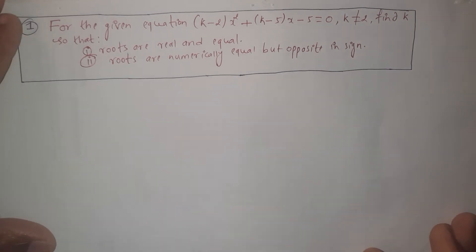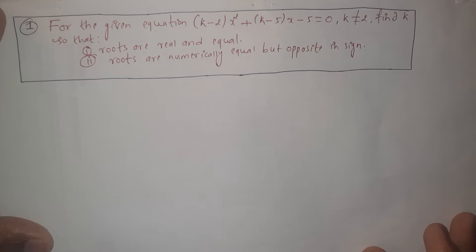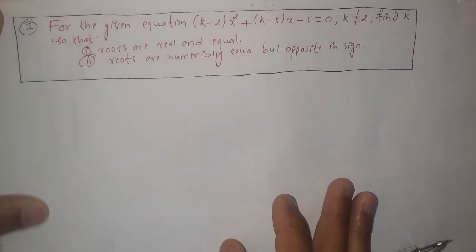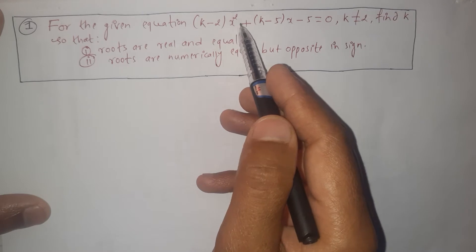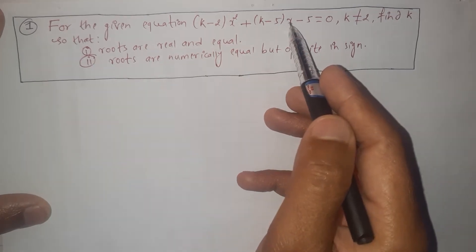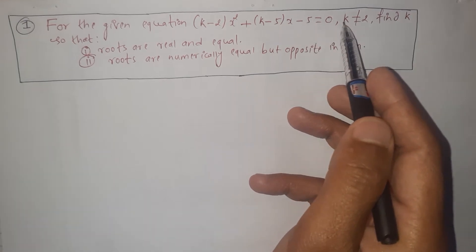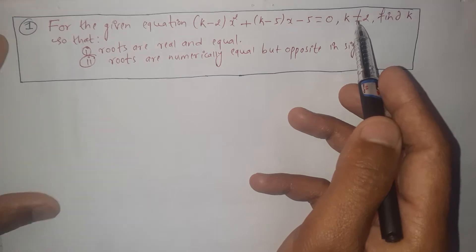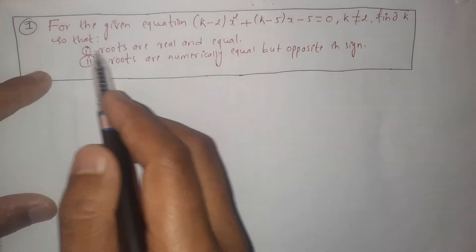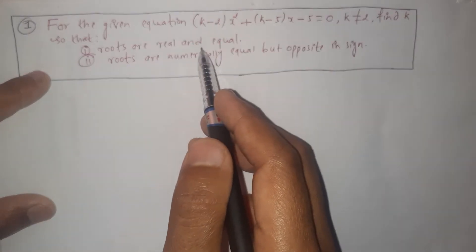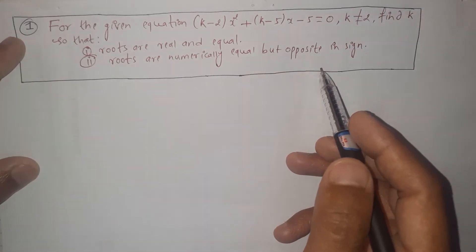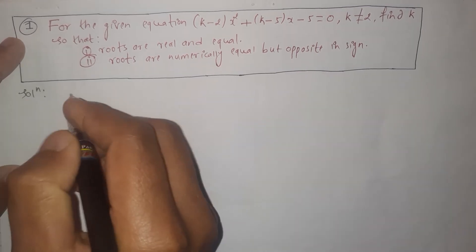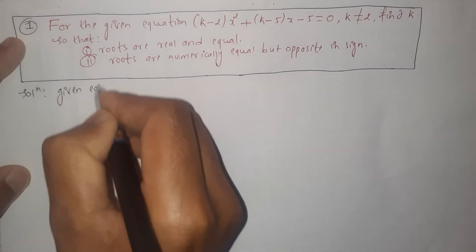Hi everyone, today in this video I am going to discuss one very important question related to quadratic equations. The question is: for the given equation (k minus 2)x squared plus (k minus 5)x minus 5 equals 0, such that k should not equal 0, find the value of k so that the roots are real and equal, and in the second case, the roots are numerically equal but opposite in sign.